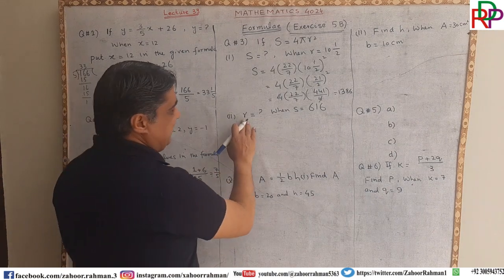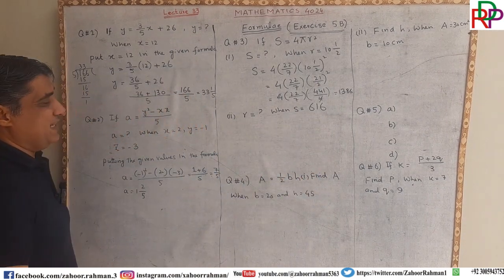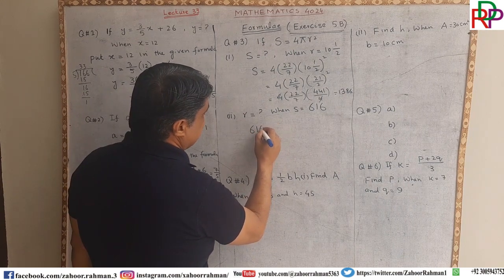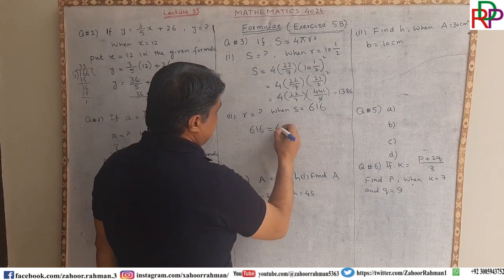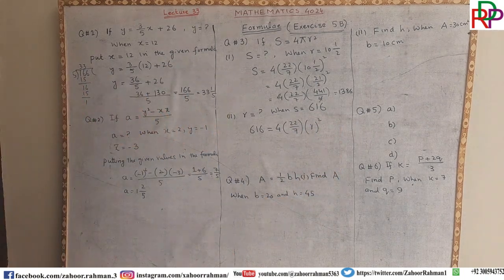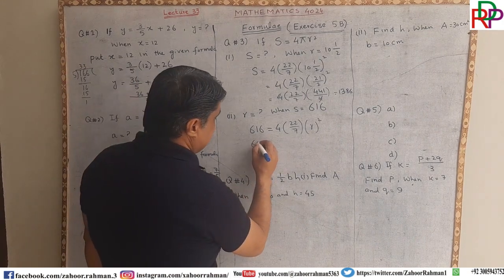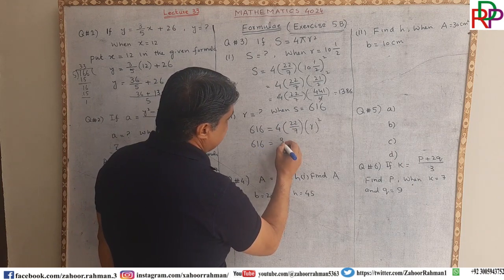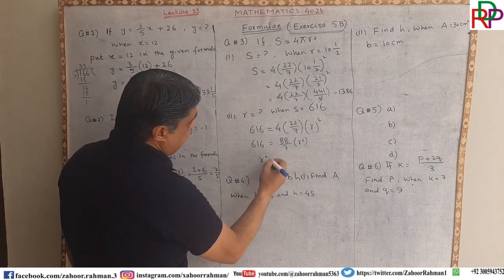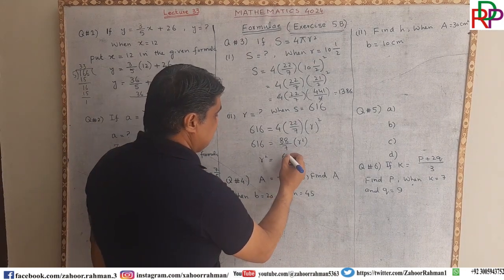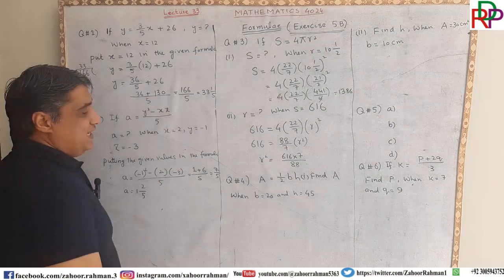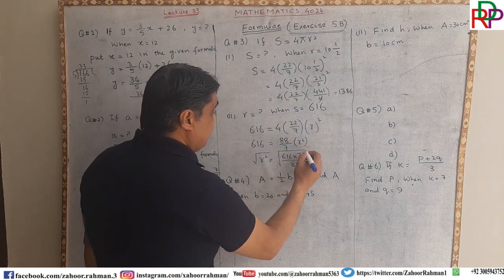The second part of this question says: make r the subject when s equals 1386, but given s equals 1600. We write 1600 equals 4π r squared. Since 4 is constant and pi is constant, multiplying 4 by 22 over 7 gives 88 over 7, so r squared equals 1600 multiplied by 7 divided by 88, giving 616 times 7 divided by 88.